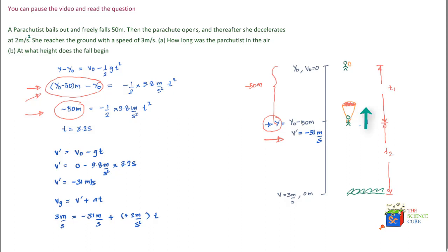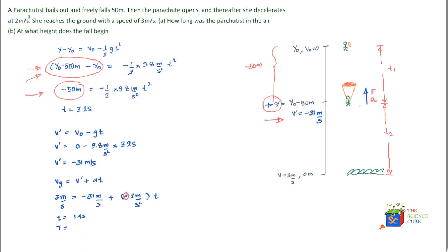There is a force acting in the upward direction causing deceleration, so the acceleration is also in the upward direction and we take a positive sign. Despite the deceleration, the sign setup validates that deceleration does not always mean a negative sign. Solving for t gives t2 equal to 14 seconds, so the total time is 3.2 plus 14 equals 17.2 seconds.